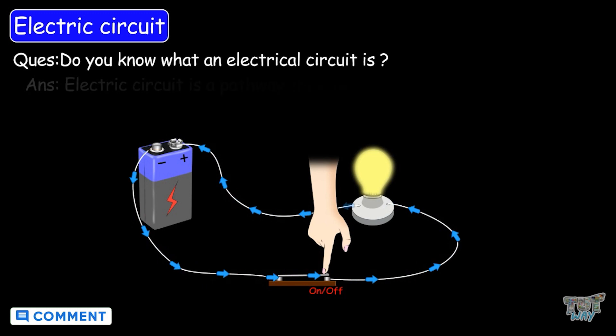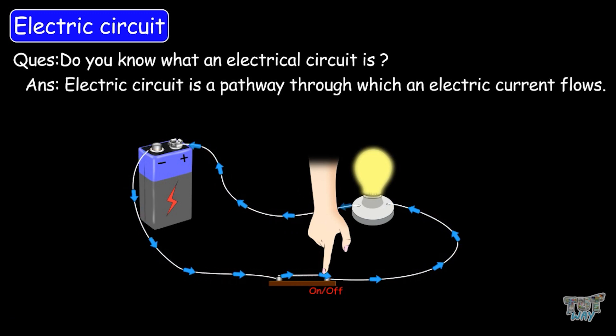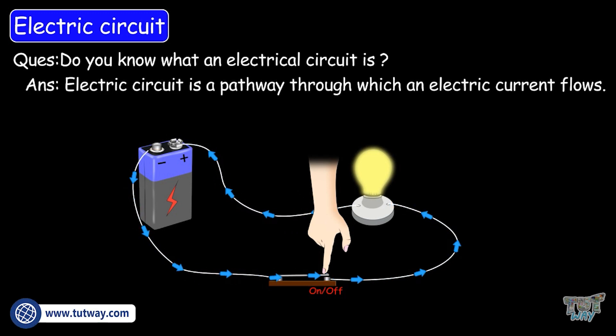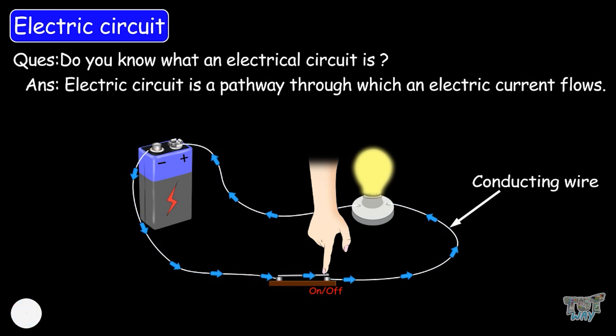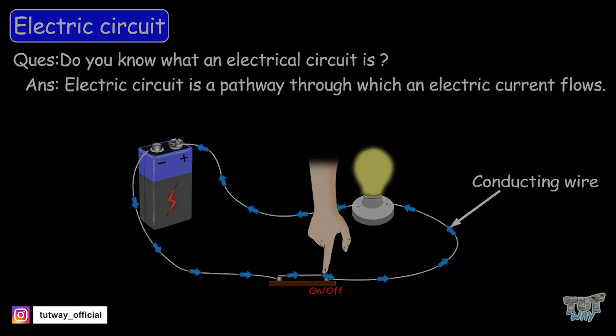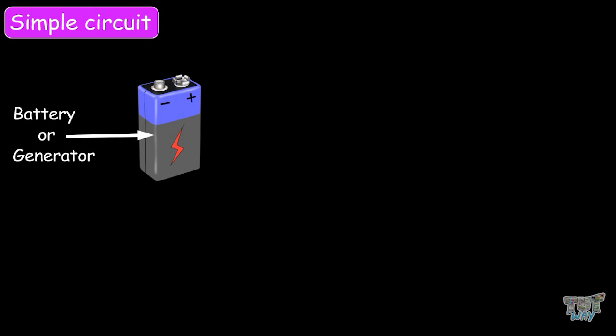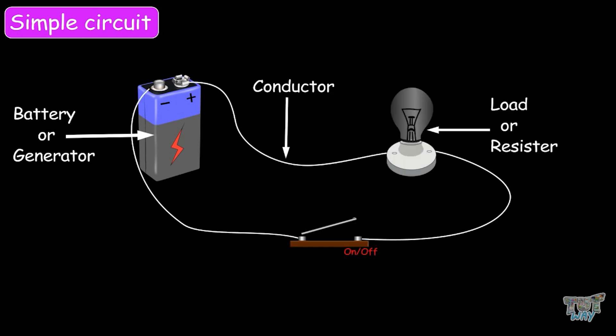An electric circuit is a pathway through which an electric current flows. A circuit pathway is usually a conducting wire. Let us first discuss the simple electric circuit. A simple electric circuit consists of a battery, conducting wires, and an electrical device to operate on.